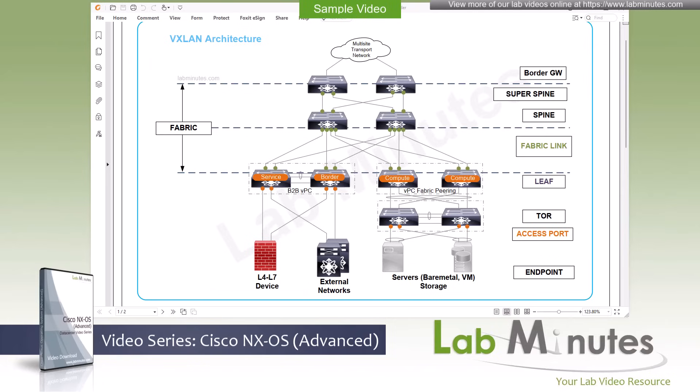For a short time, Cisco had a technology called Fabric Path for this, but because it was proprietary and only supported layer 2 traffic, it was not long before it was replaced by another technology called VXLAN. VXLAN is now pretty much an industry standard and can support both layer 2 and layer 3 type of traffic. Because of that, it has quickly gained popularity across many industry-leading networking vendors, including Cisco.